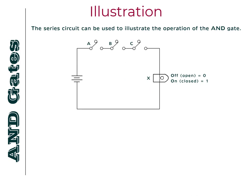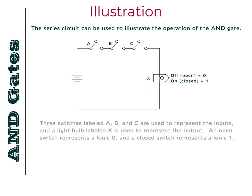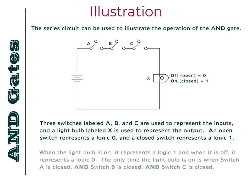The series circuit can be used to illustrate the operation of the AND gate. Three switches labeled A, B, and C are used to represent the inputs and a light bulb labeled X is used to represent the output. An open switch represents a logic 0, and a closed switch represents a logic 1. When the light bulb is on, it represents a logic 1, and when it is off, it represents a logic 0.